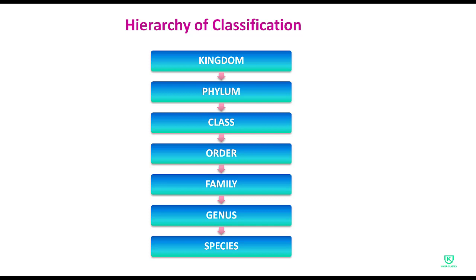The hierarchy levels from smallest to largest are: species, genus, family, order, class, phylum, and finally kingdom. Species is the smallest unit and kingdom is the largest unit of classification.